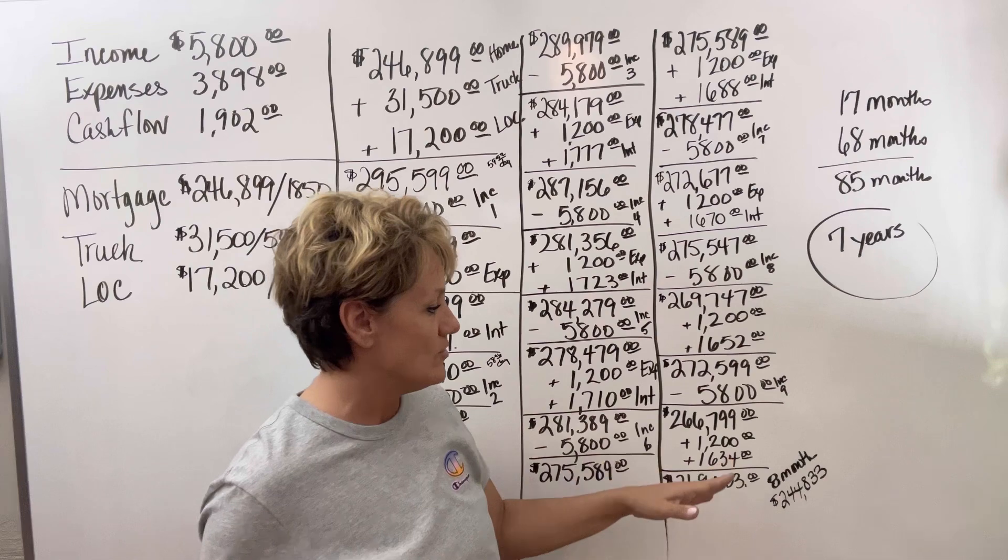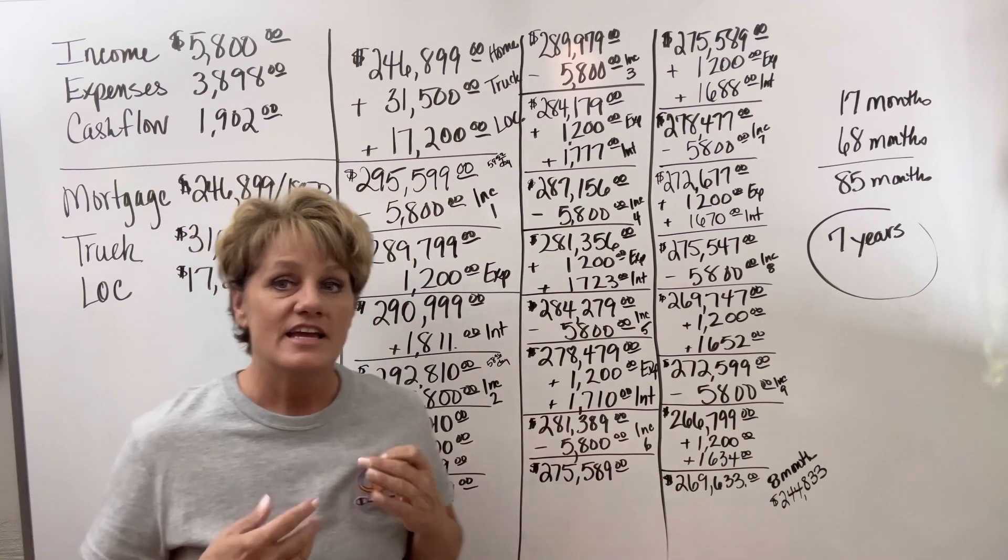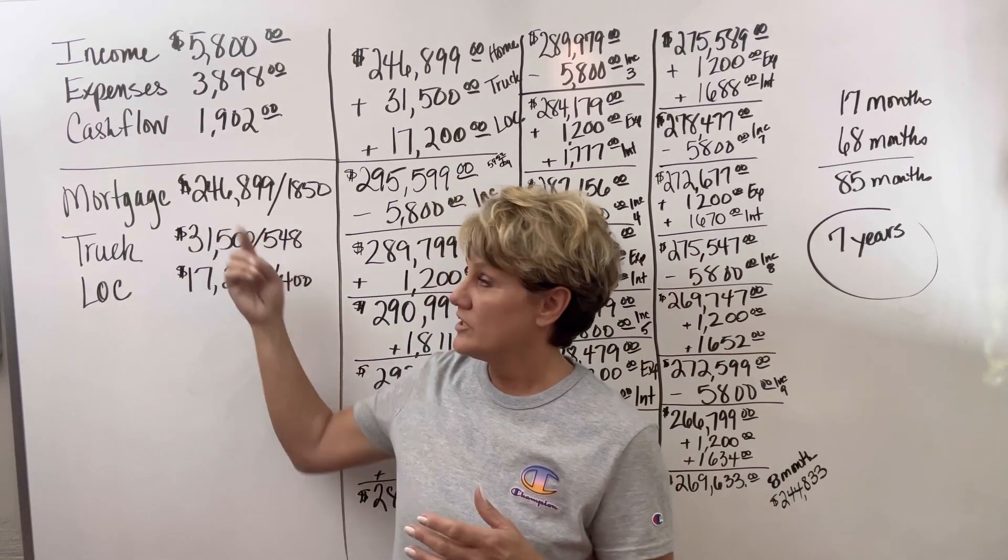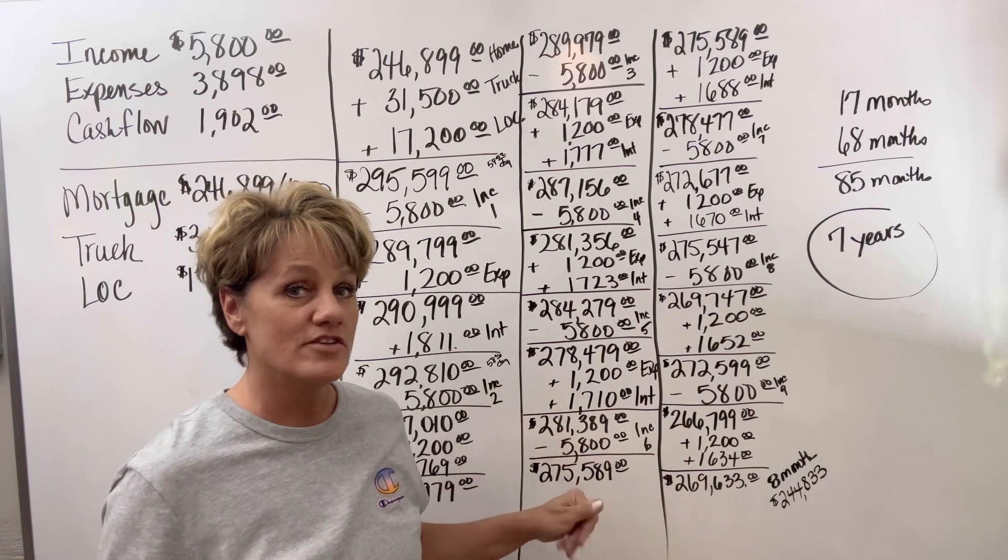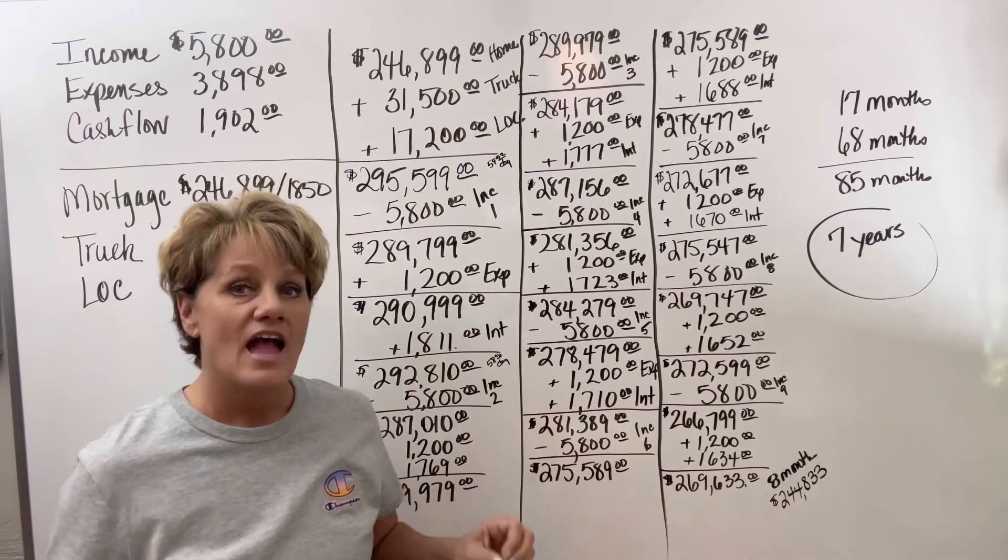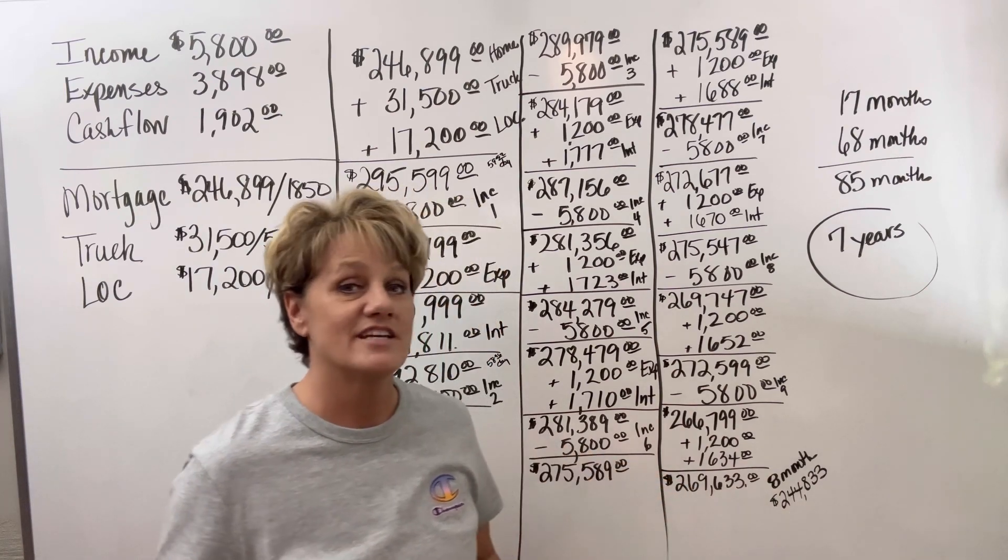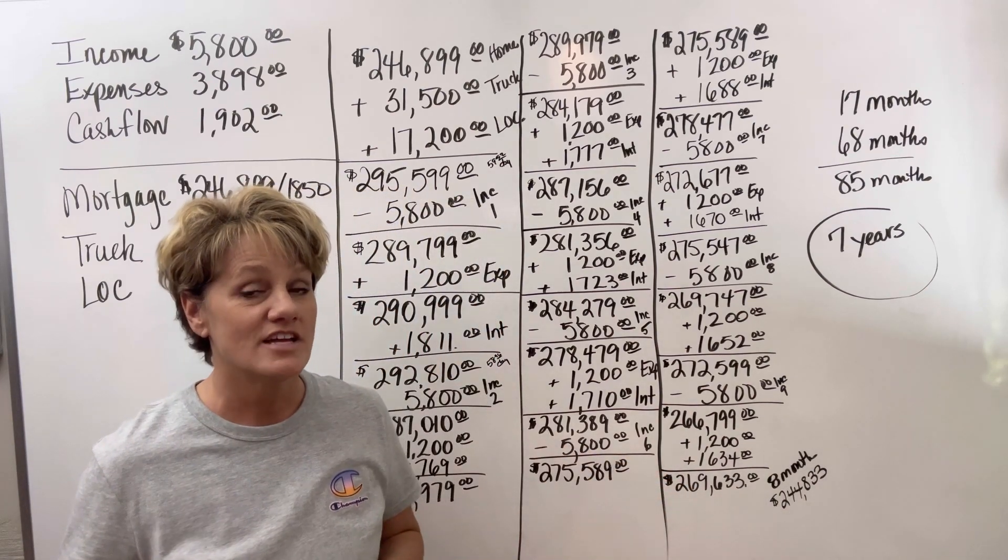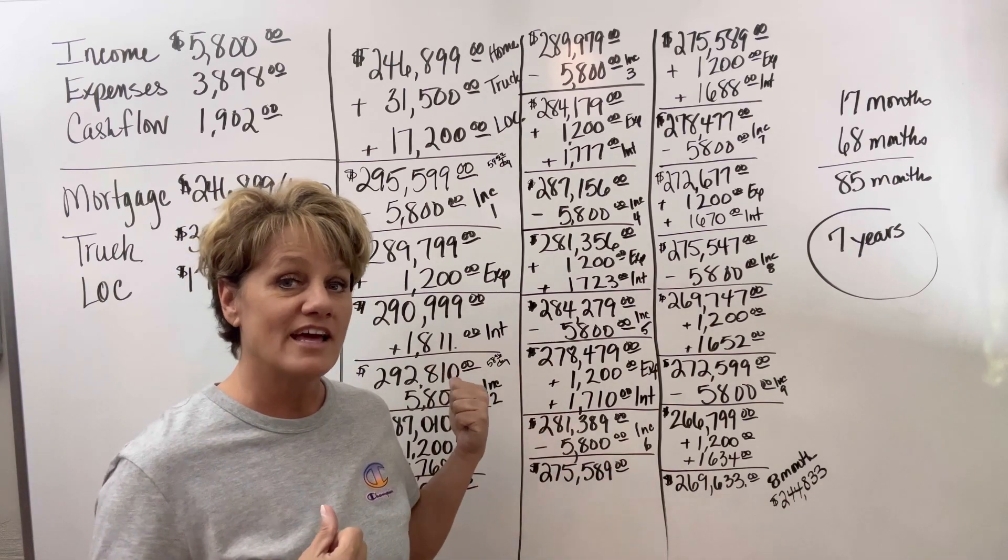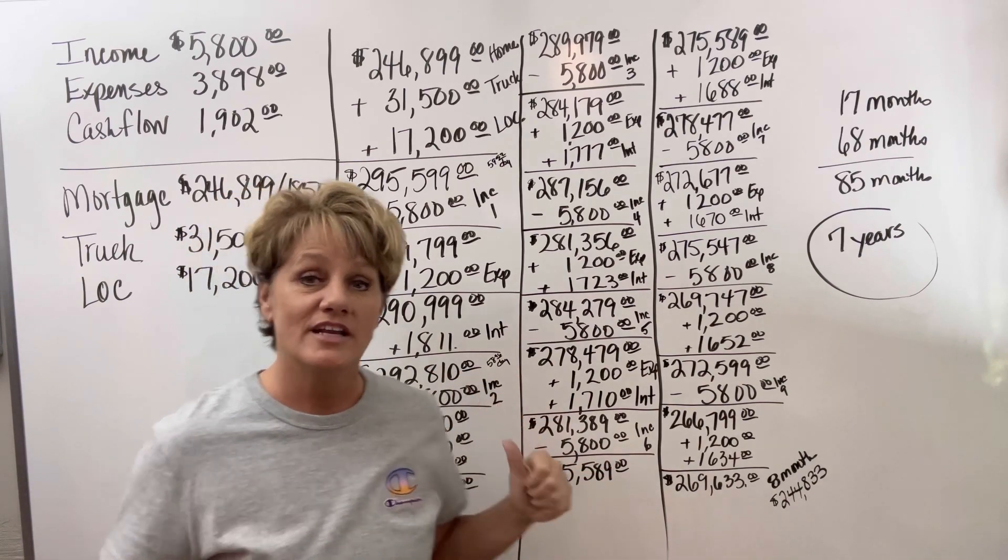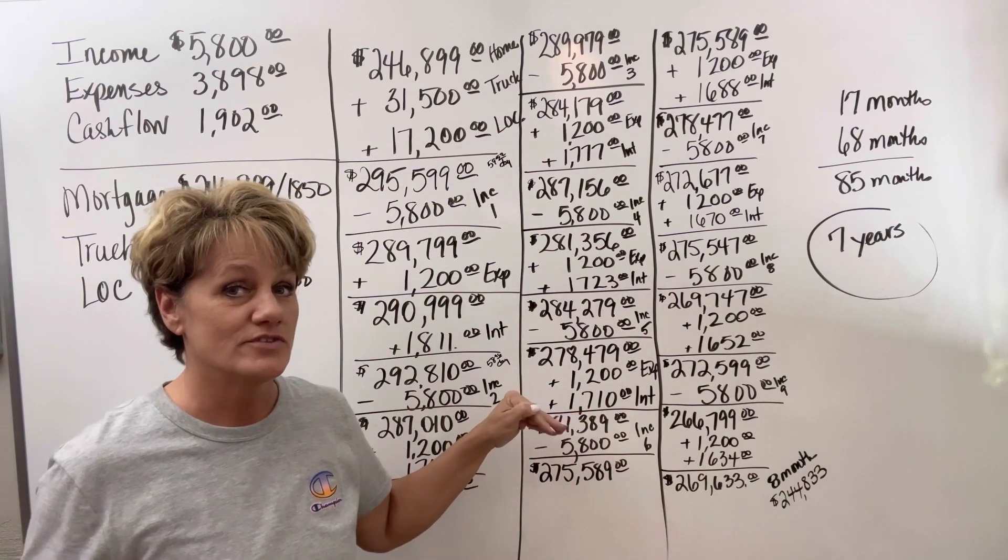He will do this all the way down through month 17. Now in month 17, he has the balance that his mortgage was previously at, at $246,000, because he has paid off all other debts in 17 months. After the 17 months is up, he will be at a balance of $244,833. He will then just be working on the principal that he already had on his home. He's avoiding all of the interest that is on that home being charged because he's transferred it into a first lien.